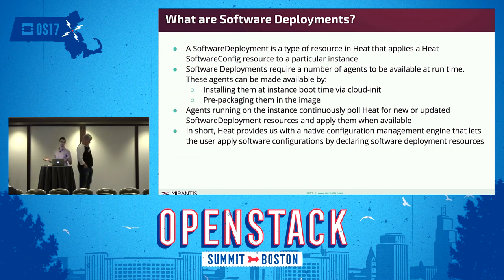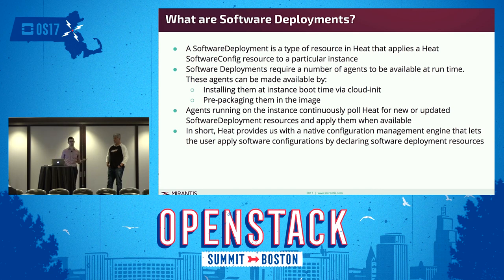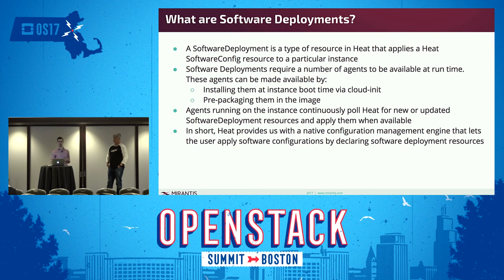So what are software deployments? Software deployment is a type of resource in Heat that applies a Heat software config resource to a particular instance. In order to work with software deployments, there are agents that need to be available on the instance — either pre-packaged in the image or installed via CloudInit. These agents continuously poll Heat for software deployments assigned to that instance. Essentially, Heat provides a configuration management engine that can be used to apply software configurations to various instances.